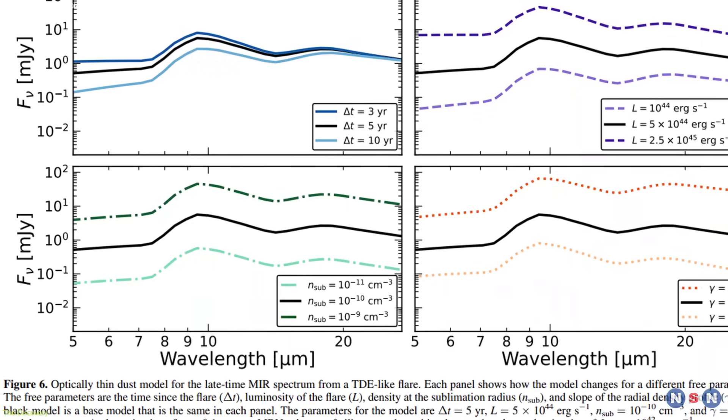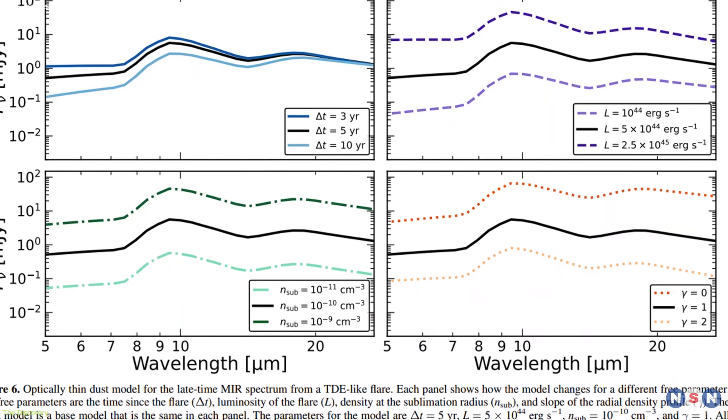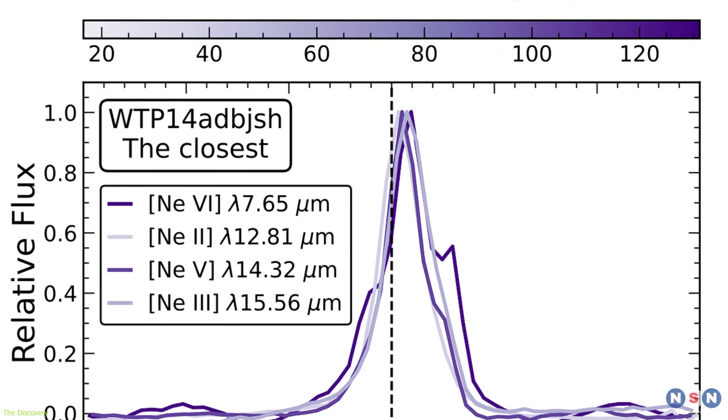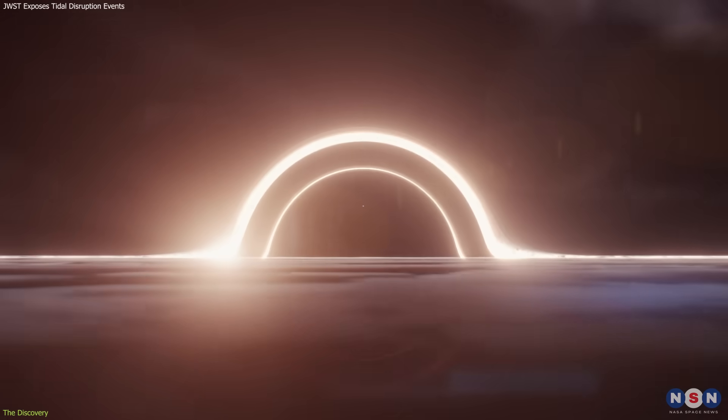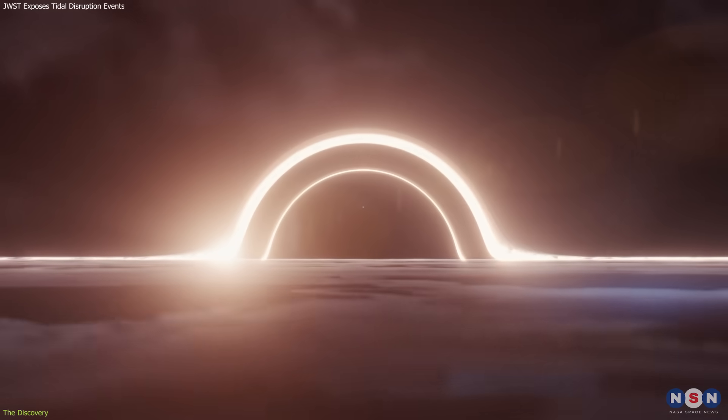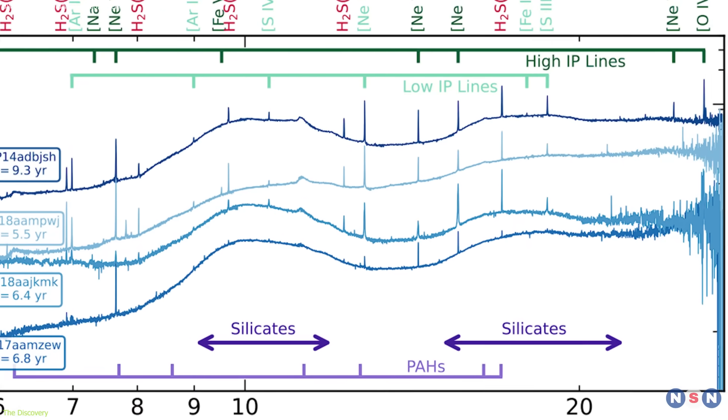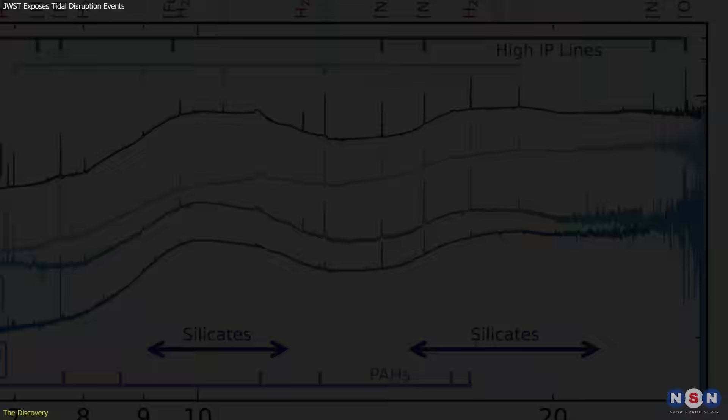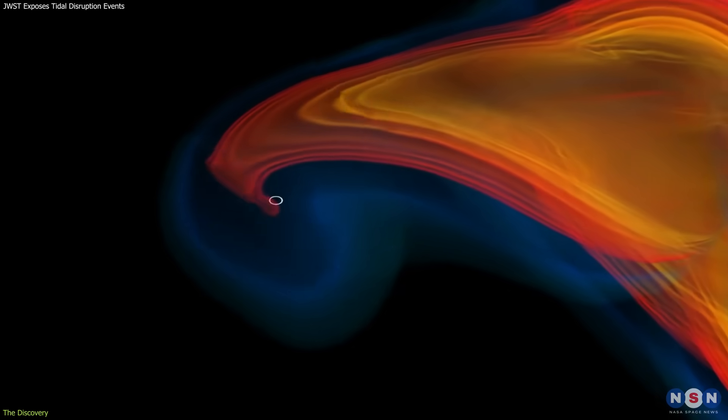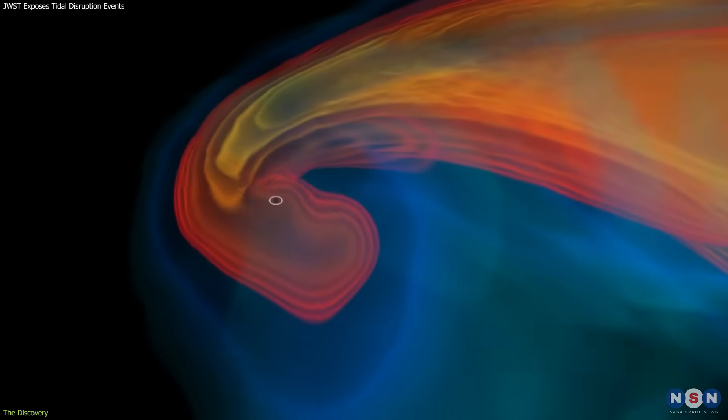The telescope detected spectral signatures that could only arise from black hole accretion. In particular, it revealed highly ionized neon, a hallmark of gas heated to extreme energies, along with strong silicate emissions from dust grains glowing in the mid-infrared. These signals confirmed that the galaxies had indeed hosted tidal disruption events.